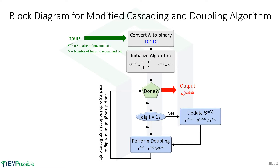Entering the main loop: we start with the global scattering matrix initialized to nothing and the binary scattering matrix as one unit cell. We look at the first binary digit — if it's a one, we update the global scattering matrix using the Redheffer star product. Whether the digit is zero or one, the very next step is always to double the binary scattering matrix — so it goes from describing one unit cell to two, then four, eight, 16, and so on. We only update the global scattering matrix when the binary digit is a one. When all binary digits are processed, the global scattering matrix describes any number of unit cells we wish.